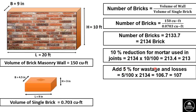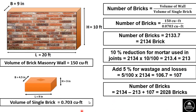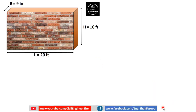Additionally, wastage and losses of bricks also occur on site, so we add 5% for wastage and losses: 5% × 2134 = 106.7, or approximately 107 bricks. The net number of bricks required is: 2134 − 213 (mortar deduction) + 107 (wastage) = 2028 bricks.